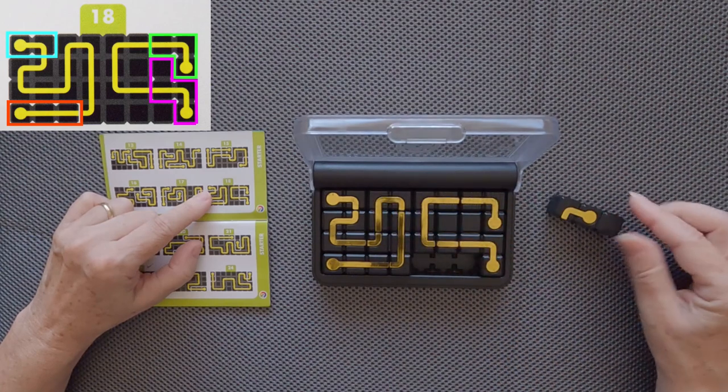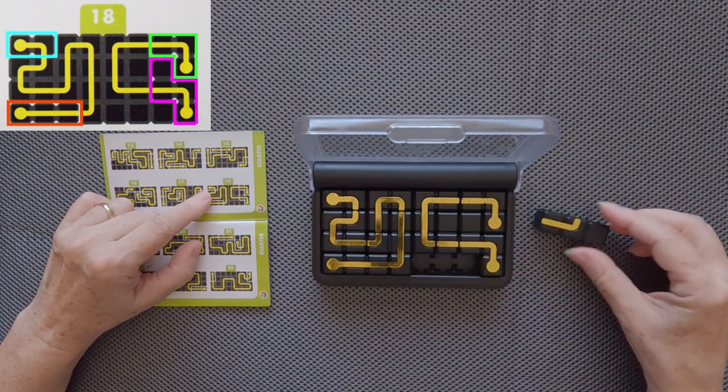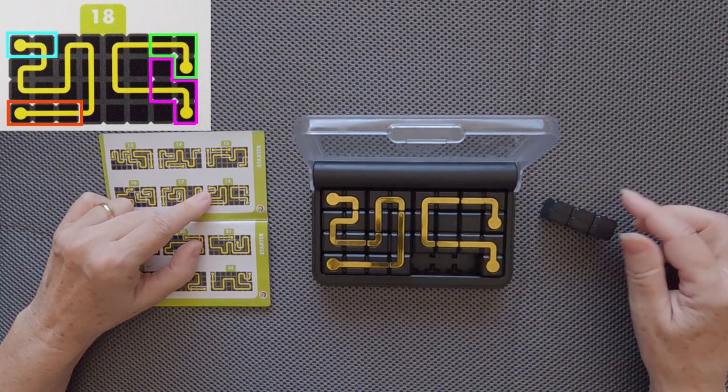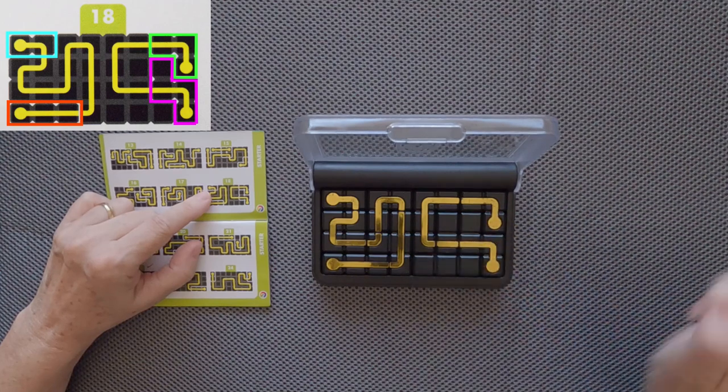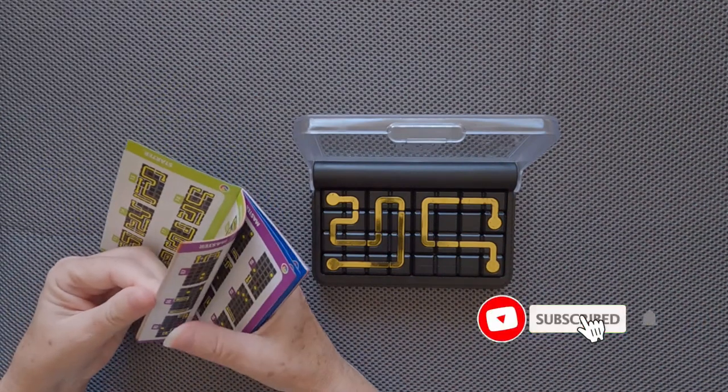We have an extra piece. I cannot place the piece line out. The unconnected path pieces are not allowed. In this case, we use the blank side like that. Puzzle solved. If we take another challenge.